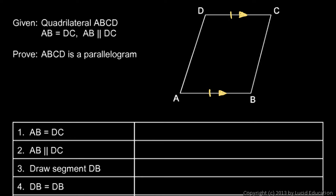The approach is instructive, so I'll go over it before writing out all the steps. I'm going to start by drawing in diagonal DB and labeling these angles: angle 1 and angle 2. If this side is parallel to that side, then angle 1 and angle 2 are alternate interior angles, so they must be equal.